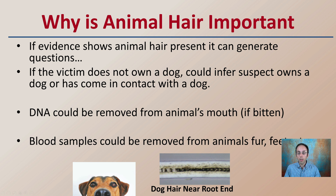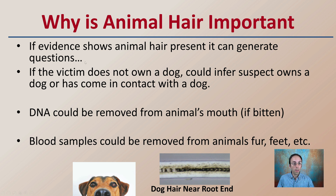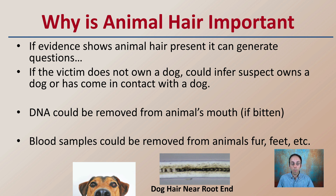Starting with why is animal hair in general important? If evidence shows animal hair present, it can generate questions — for example, if the victim does not own a dog, it could infer the suspect owns a dog or has come in contact with one. Also, DNA can be removed from an animal's mouth if bitten, and blood samples can be removed from an animal's fur, feet, etc. Identifying animal hair can be very important in a forensic investigation.